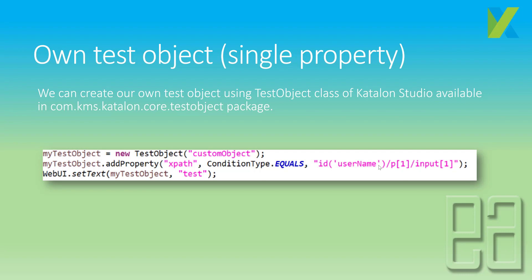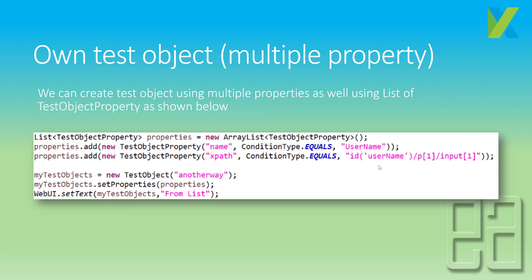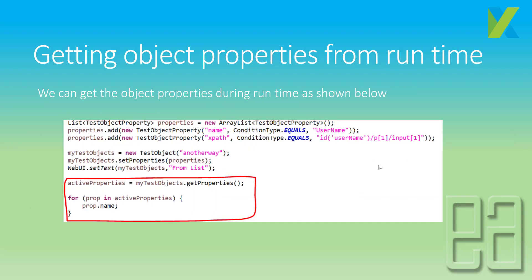This is a completely custom object. The key differentiation is that you don't need an object in the object repository — whereas in the first approach you must have the object in the repo. If an object needs to be identified using multiple properties, you create a list of TestObjectProperty, create an ArrayList, add properties like name and XPath, and then use the setProperties method to perform the operation.